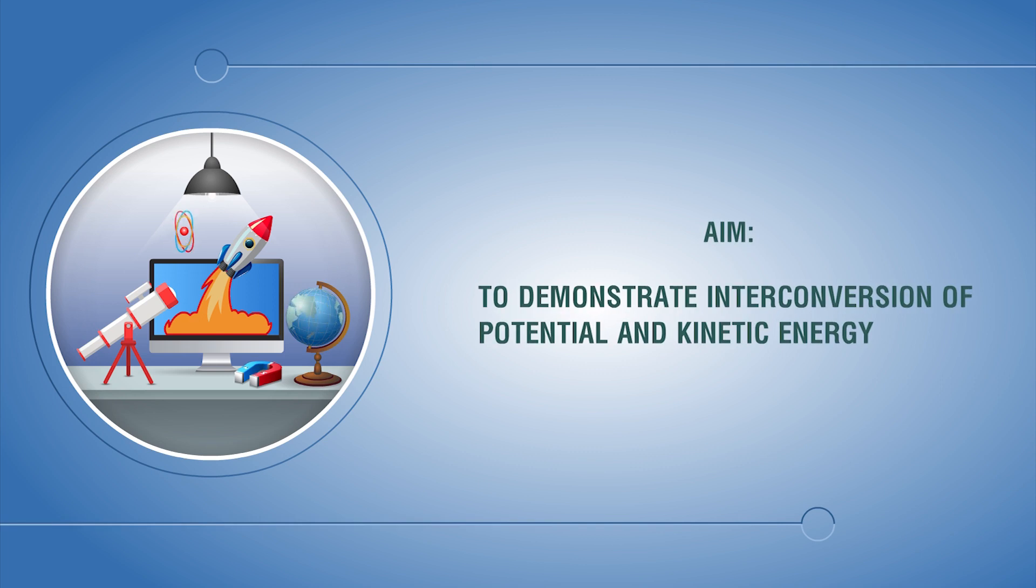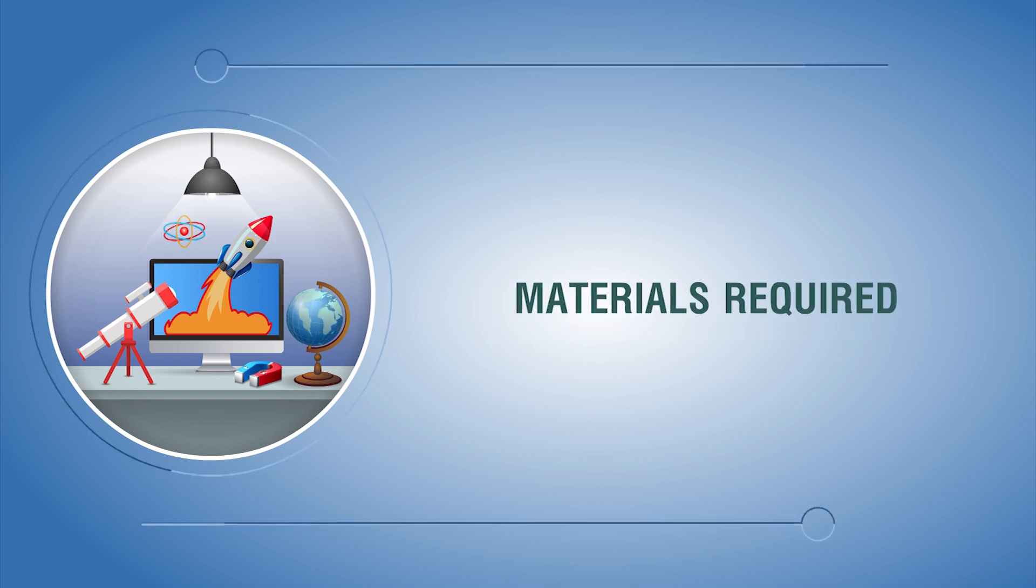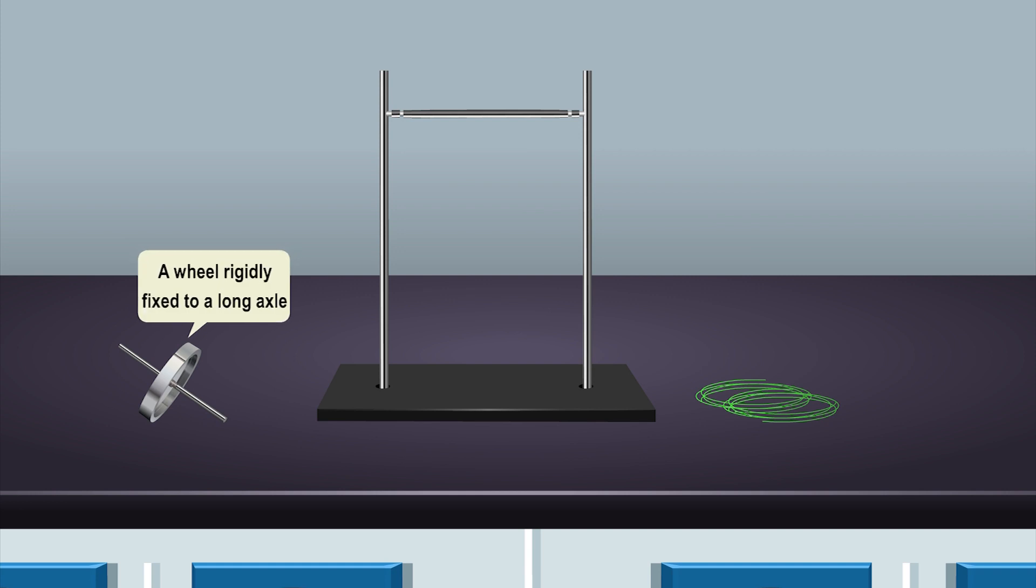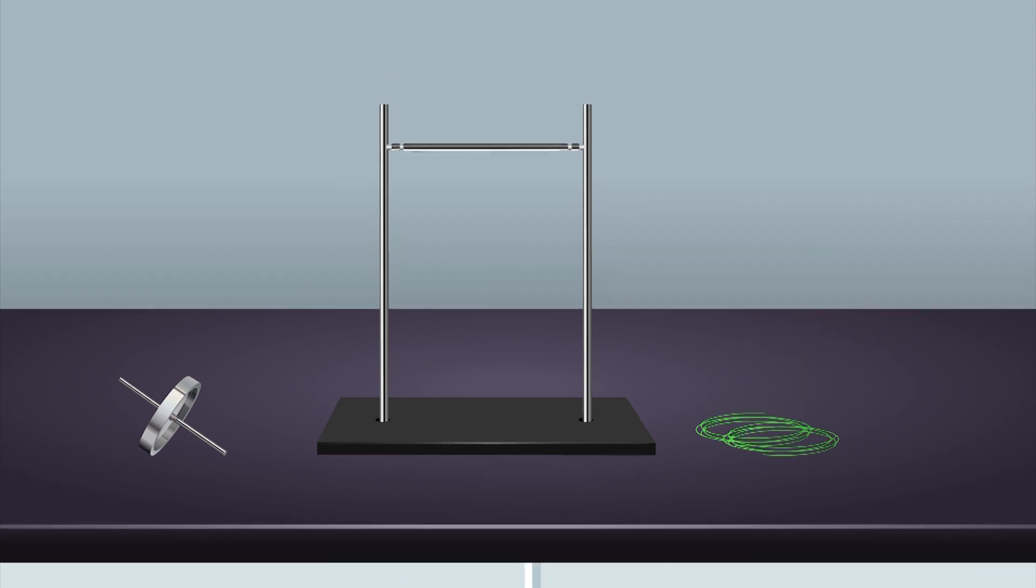Aim to demonstrate the inter-conversion of potential and kinetic energy. Materials required: a wheel rigidly fixed to a long axle, the wheel should be at the center of the axle, two threads of equal length, stand with a rod horizontally fixed to it.